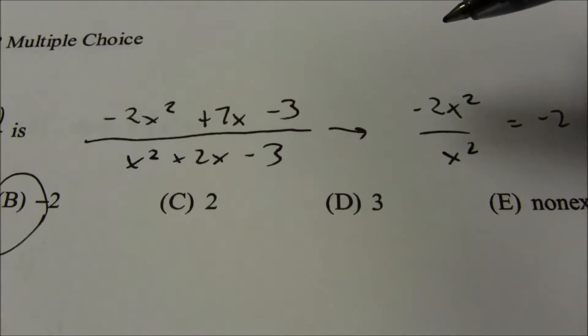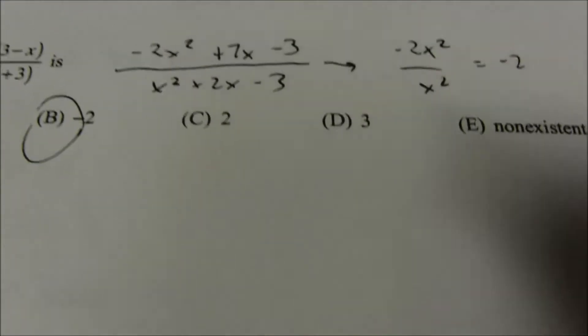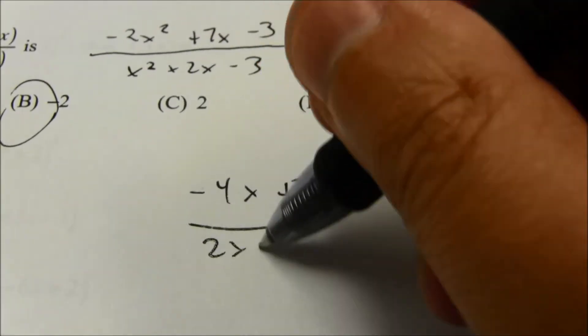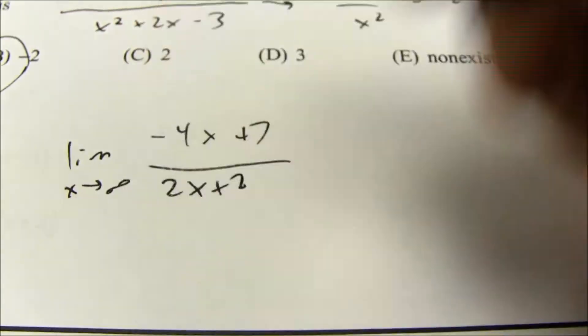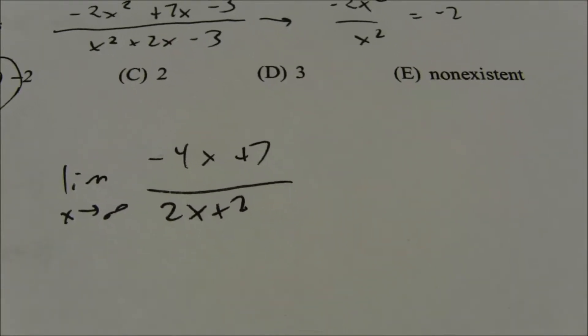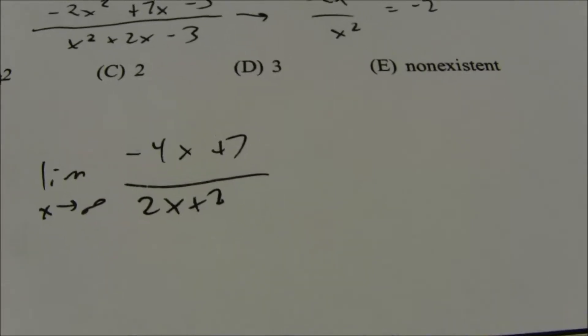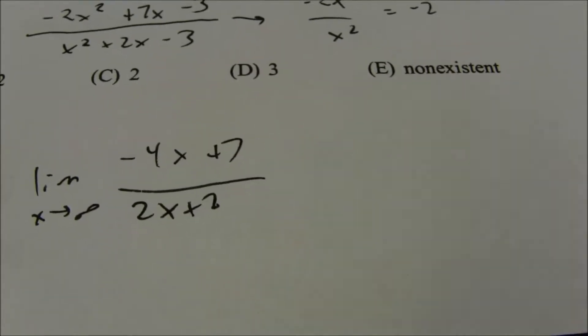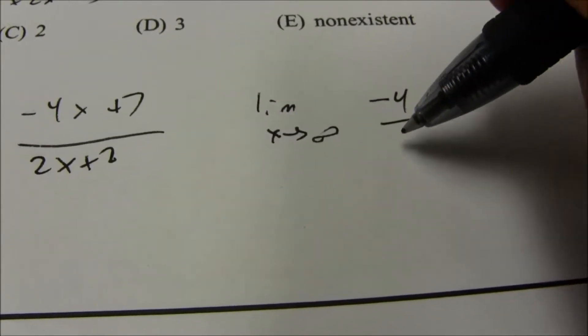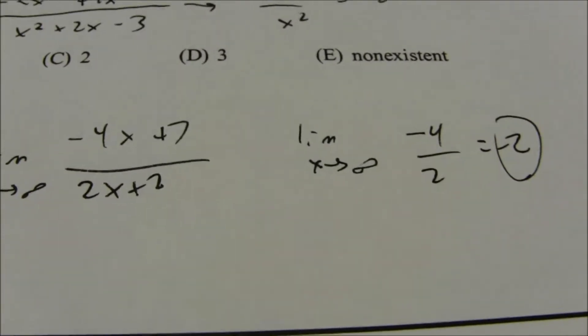You could also use L'Hôpital's rule — just take the derivative of the top and bottom. The first time you get negative 4x plus 7 over 2x plus 2, and you'd still be taking the limit as x approaches infinity. It's approaching negative infinity over infinity, an indeterminate form. You can take the derivative again and you end up getting negative 2. So there are several ways to do this.